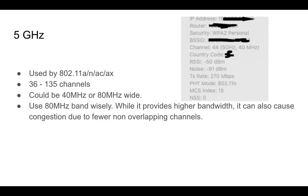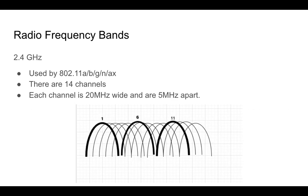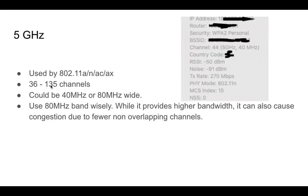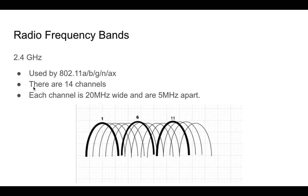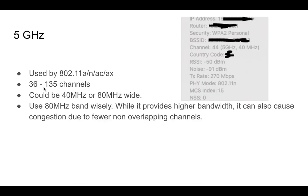In 5 GHz, we have a lot more channels. In 2.4 GHz we have only 14, but in 5 GHz we have up to 135, and in some cases as few as 36 — but 36 is still a lot more than 14. There are different types of 5 GHz bands, which is why we have a range of channels. 5 GHz is used in 802.11a, n, ac, and ax — so in a lot of the newer standards.